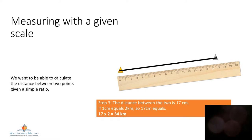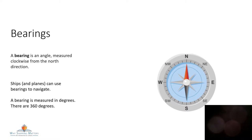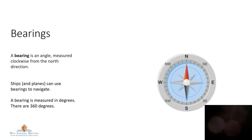So on my scale, if one centimetre equals two kilometres, then 17 centimetres equals 34 kilometres. Don't worry if you can't do it in your head — you can still work it out. Don't forget to carry the one. Now we're going to talk about bearings. A bearing is an angle — a direction — measured clockwise from the north direction. Ships and planes use bearings to navigate. A bearing is measured in degrees, and like all circles, 360 degrees.